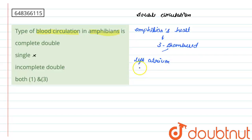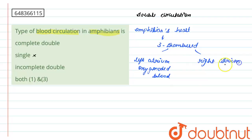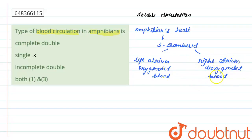The left atrium brings in the oxygenated blood, whereas the right atrium receives the deoxygenated blood. So in this three-chambered heart, the first chamber — the left atrium — receives oxygenated blood, and the second chamber — the right atrium — receives deoxygenated blood.